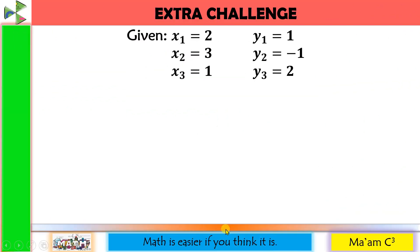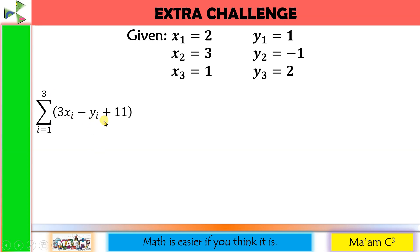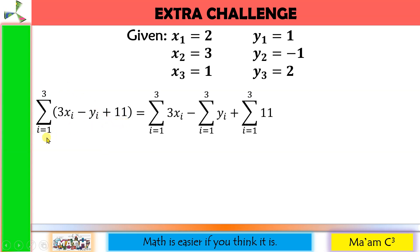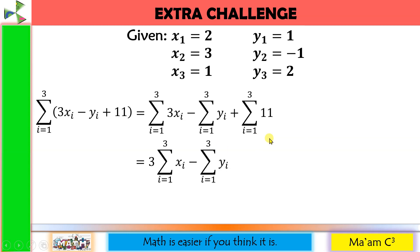Let us do an extra challenge. We have X sub 1 to X sub 3 and Y sub 1 to Y sub 3. We evaluate the summation of quantity 3 times X sub I minus Y sub I plus 11, I going from 1 to 3. Applying rule number 1, we separate to get: 3 times the summation of X sub I, minus the summation of Y sub I, plus the summation of 11, all from I equals 1 to 3. We can then apply rule number 2 to factor out the constant 3, and rule number 3 for the constant 11, giving us 11 times 3 equals 33.